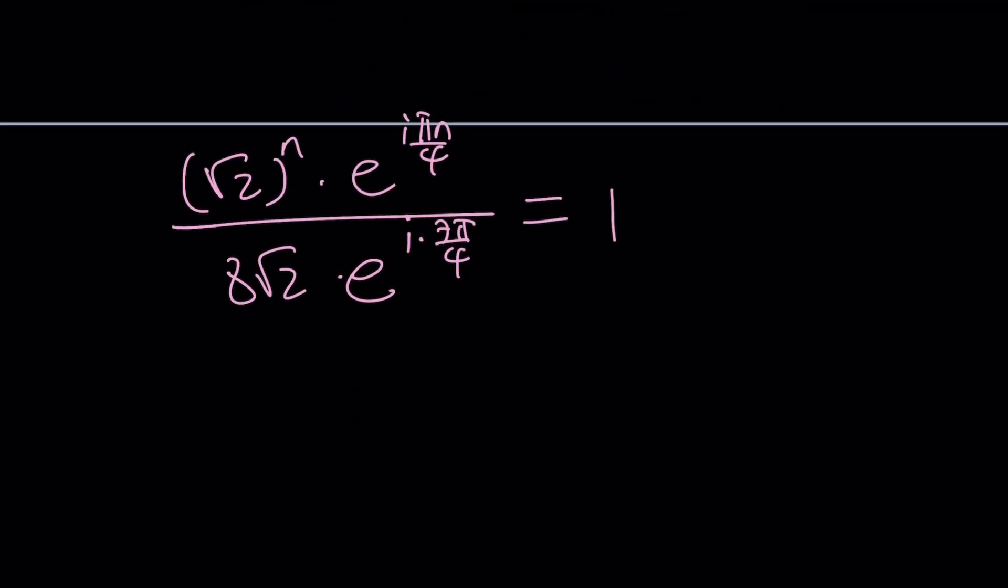But instead of 1, I want to write something else. So at this point, we're going to complexify the 1. How can you complexify 1? 1 is right here, and it makes an angle of 0 radians or 2π radians or any multiple of 2π.